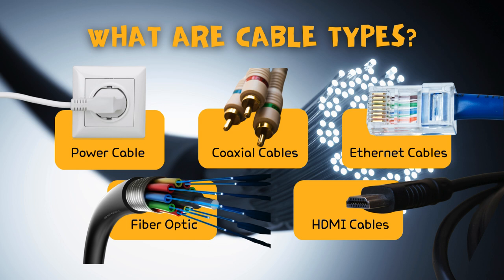4. Fiber-optic cables. Fiber-optic cables are becoming increasingly popular for high-speed data transmission over long distances. These cables use strands of glass or plastic fibers to transmit signals in the form of light pulses. Fiber-optic cables offer several advantages, such as high bandwidth, low signal loss, and immunity to electromagnetic interference. They are commonly used in telecommunications, internet backbones, and data centers.